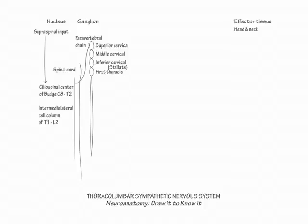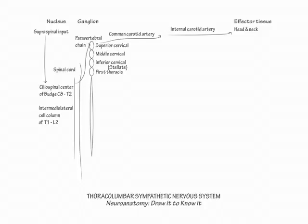Now draw a representative postganglionic sympathetic fiber from the superior cervical ganglion. Show this fiber ascend the common carotid artery and continue up the internal carotid artery into the cranium. A dissection of either the common or internal carotid arteries will cause Horner syndrome. Then indicate the postganglionic fibers from the middle cervical and stellate ganglia terminate in the arm.